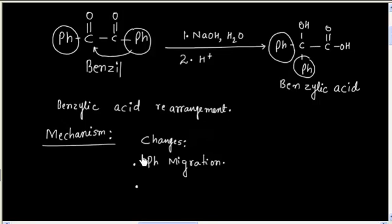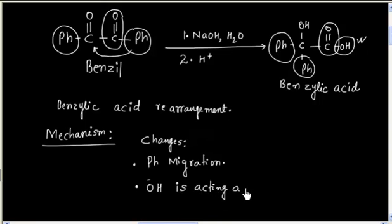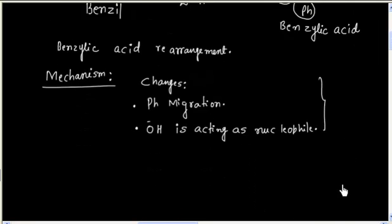Now, another thing — if you see this carbon, it has one oxygen, but in the product it has two oxygens; one OH group is extra. So it seems OH minus is acting as a nucleophile. Keeping these two things in mind, we can write the mechanism.